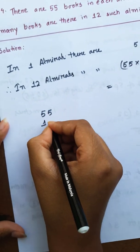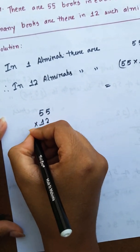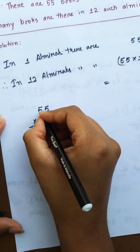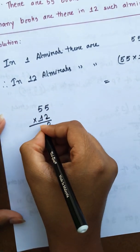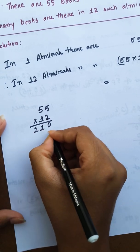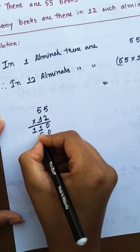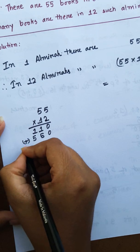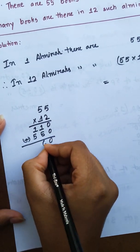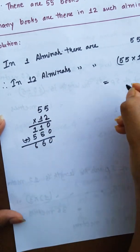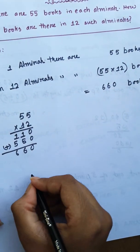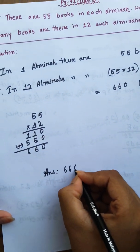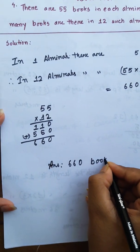55 into 12: calculating the multiplication gives 660. Therefore, the answer is 660 books.